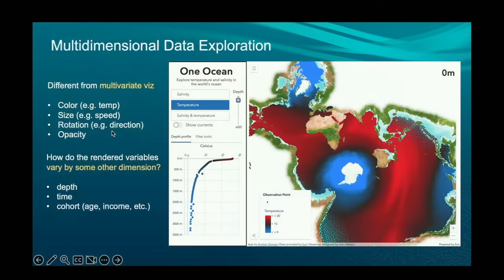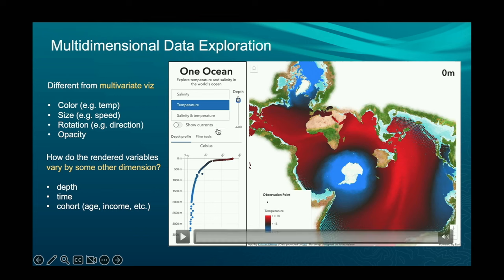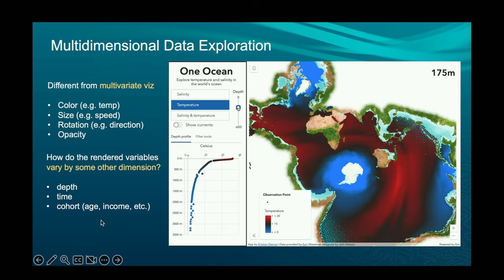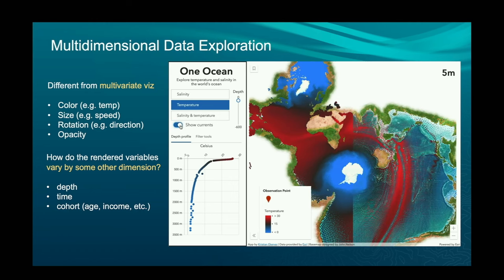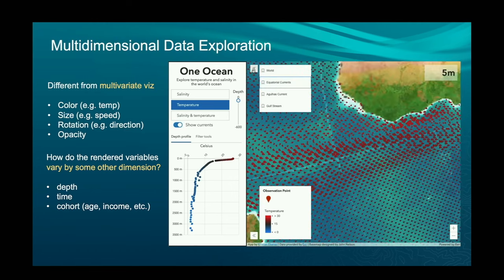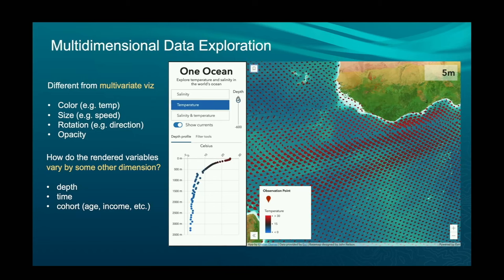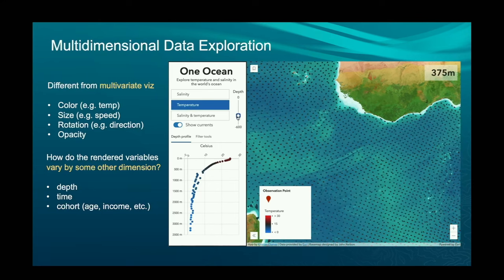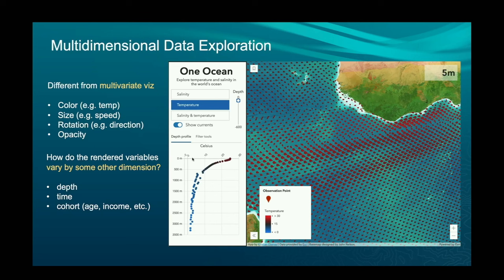When you set the Arcade expression, that goes on the valueExpression property of the color variable, not on the field itself. You can also do multiple variables — creating apps that allow you to dynamically change the renderer as the user interacts. For instance, clicking 'show currents' adds a size visual variable and a rotation variable to the style, so you can see how the current changes as the depth of the water changes. There can be something like 900 different fields, picking a field based on user input and updating the renderer — very fast, playing animations up to 60 frames per second.